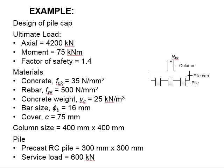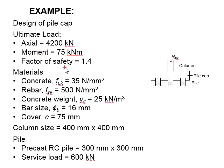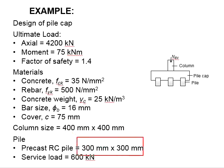Let us try another example to design a pile cap. The ultimate axial load is 4200 kN and the ultimate moment equals 75 kNm. The factor of safety is 1.4. Material properties: fck = 35, fyk = 500, concrete unit weight = 25 kN/m³, bar size = 16 mm, concrete cover = 75 mm, column size = 400×400 mm, and the RC pile = 300×300 mm with a service load capacity of 600 kN.